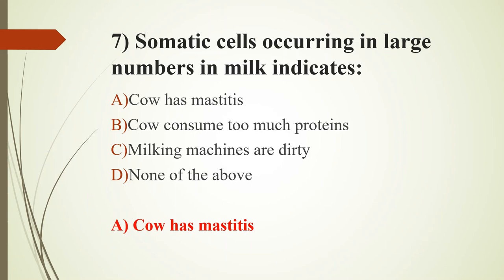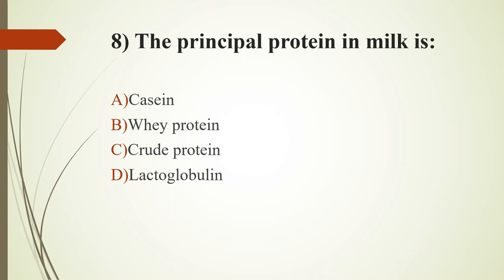Eighth question: the principal protein in milk is — option A, casein; option B, whey protein; option C, crude protein; option D, lactoglobulin. The answer is option A, casein. Casein constitutes 82% of milk protein, and whey protein constitutes 20% of the total milk protein.